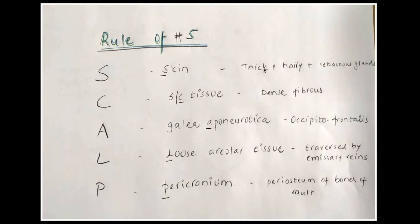The first layer, skin, is very thick and hairy, and has rich sebaceous glands. The second layer is dense fibrous connective tissue with locules containing fat and blood vessels, with nerves traversing through this layer to reach the skin.